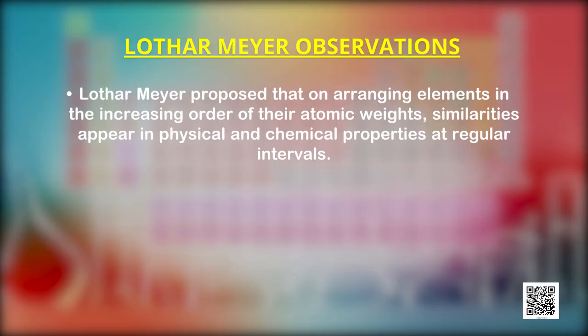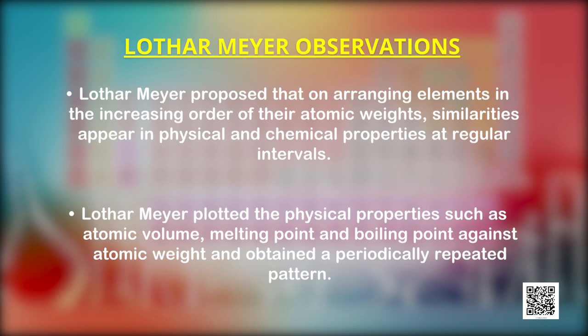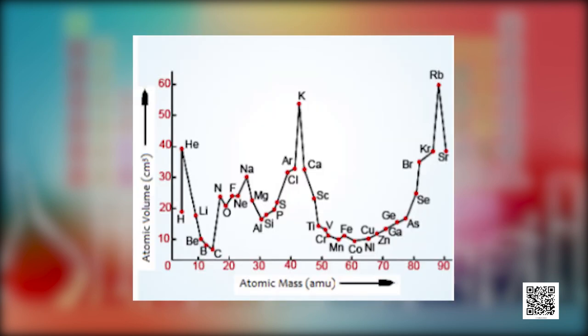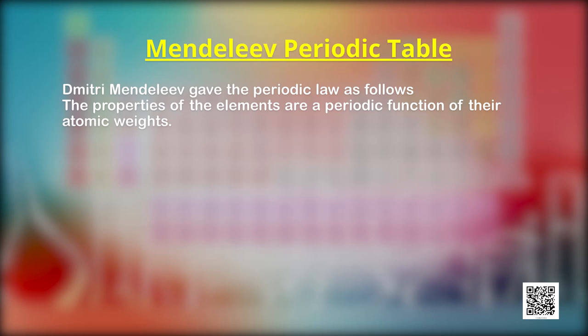The periodic law, as we know it today, owes its development to the Russian chemist Dmitry Mendeleev and the German chemist Lothar Meyer. Lothar Meyer proposed that on arranging elements in increasing order of their atomic weights, similarities appear in physical and chemical properties at regular intervals. He plotted physical properties such as atomic volume, melting point, and boiling point against atomic weight, showing periodic repetition of properties. Mendeleev published the famous periodic law, which states that the properties of the elements are a periodic function of their atomic weights.